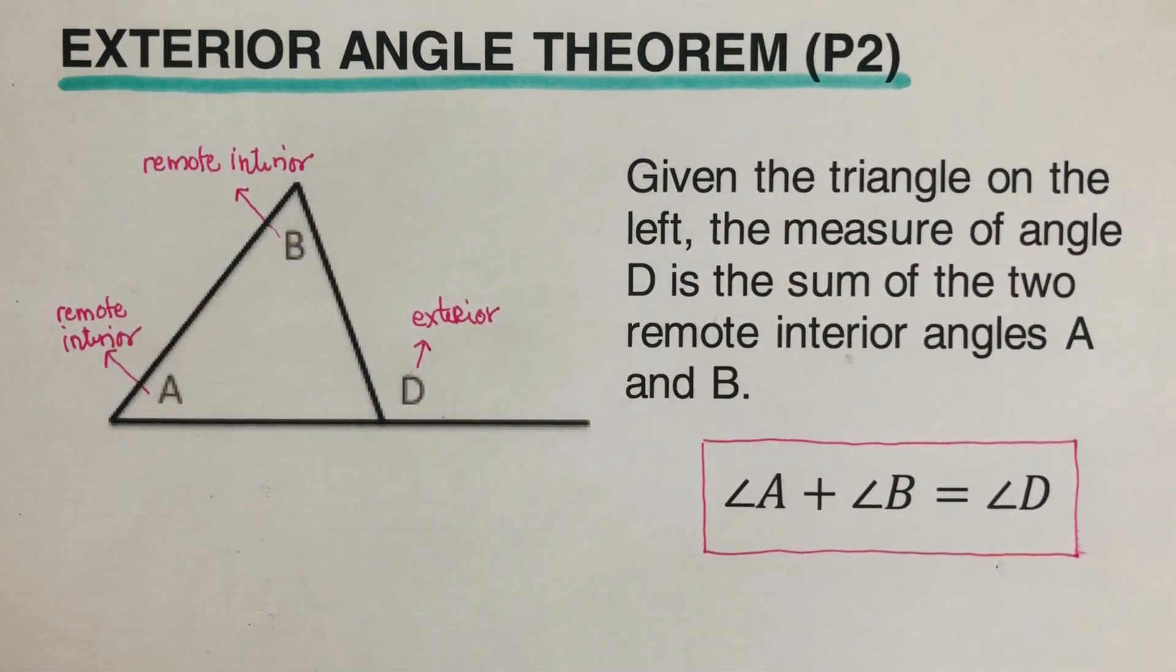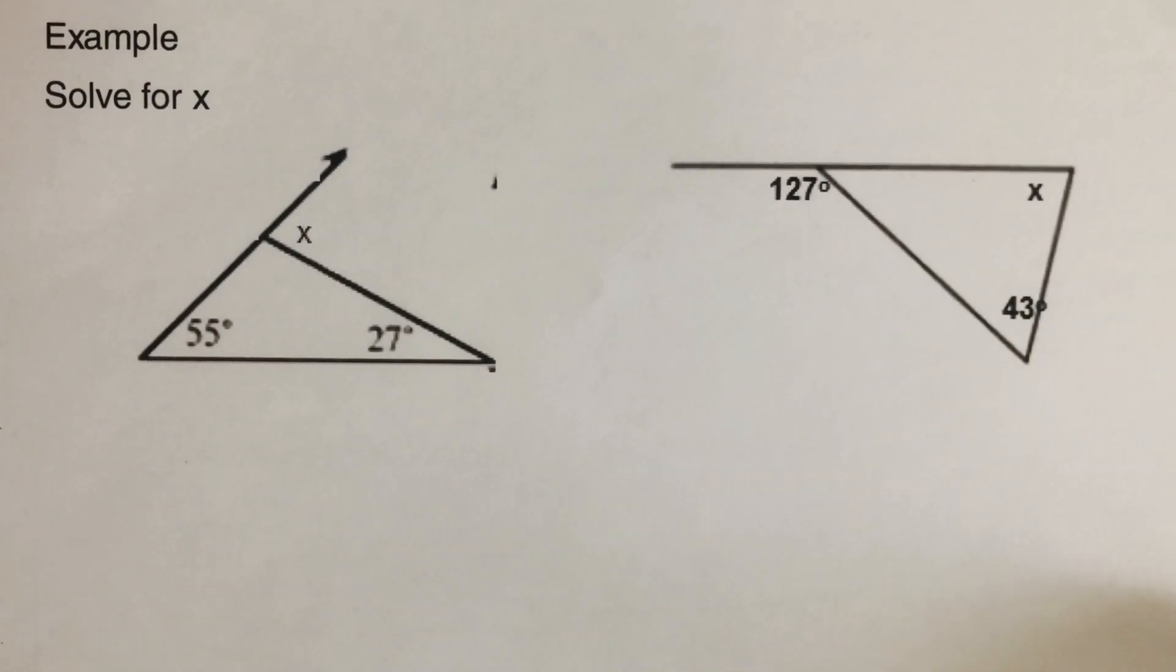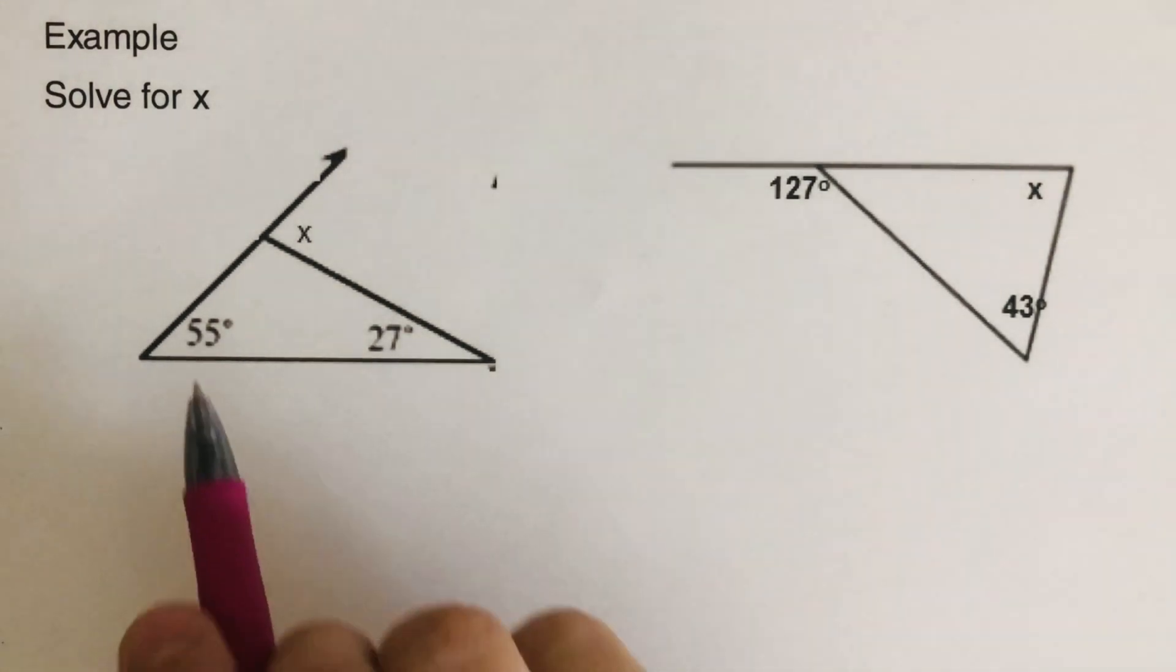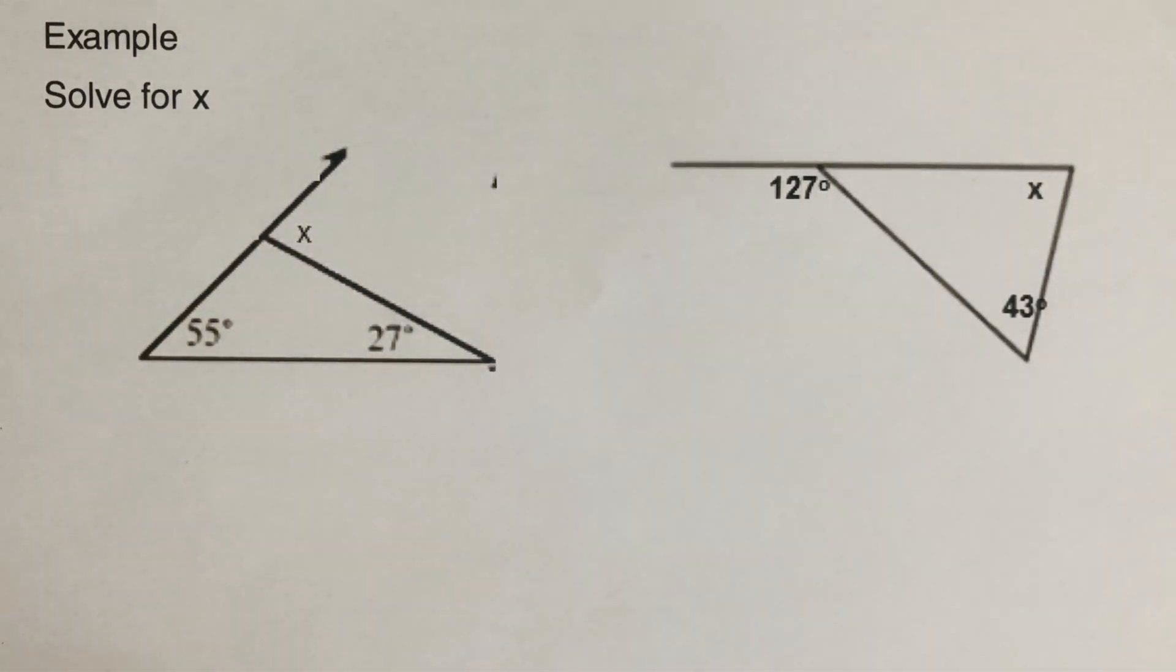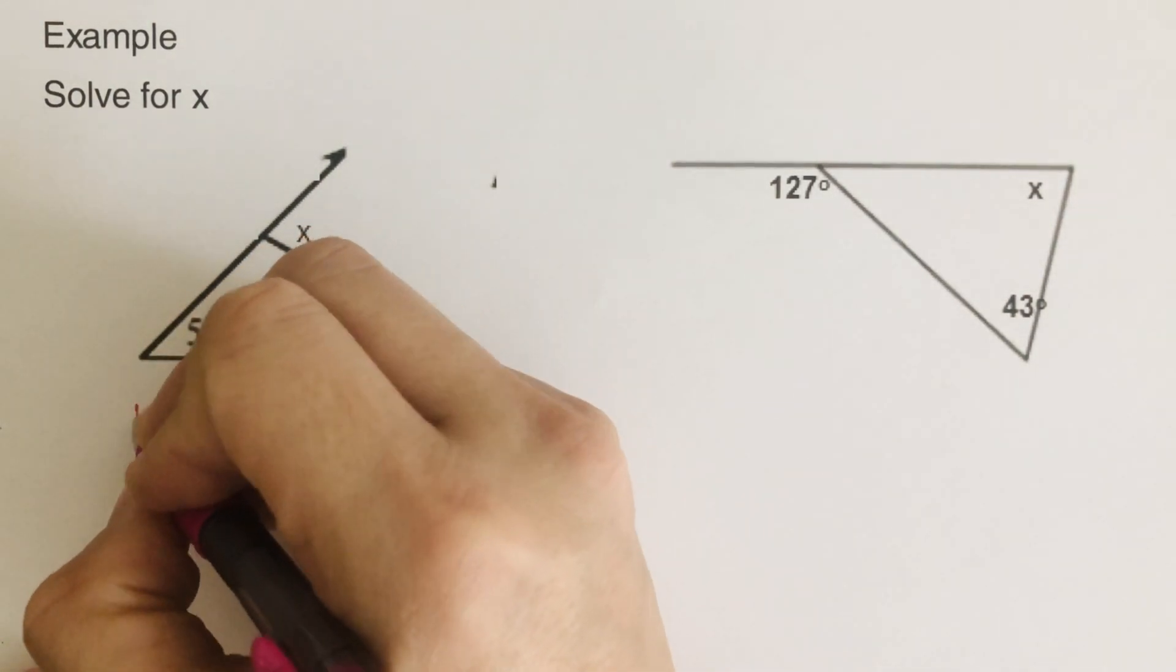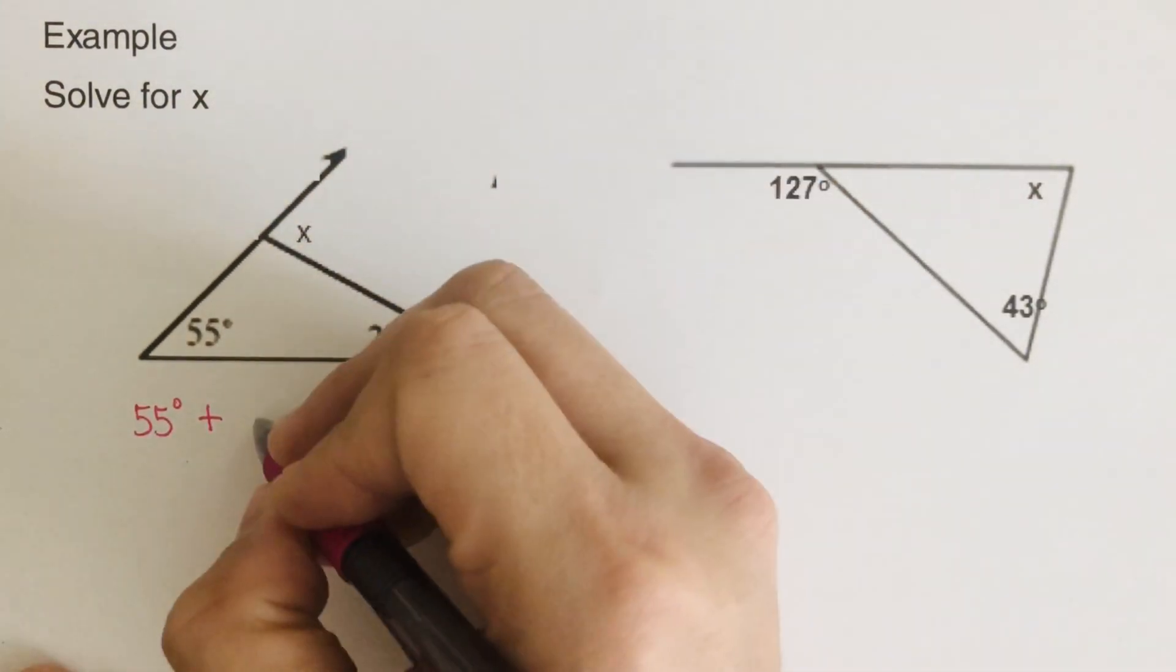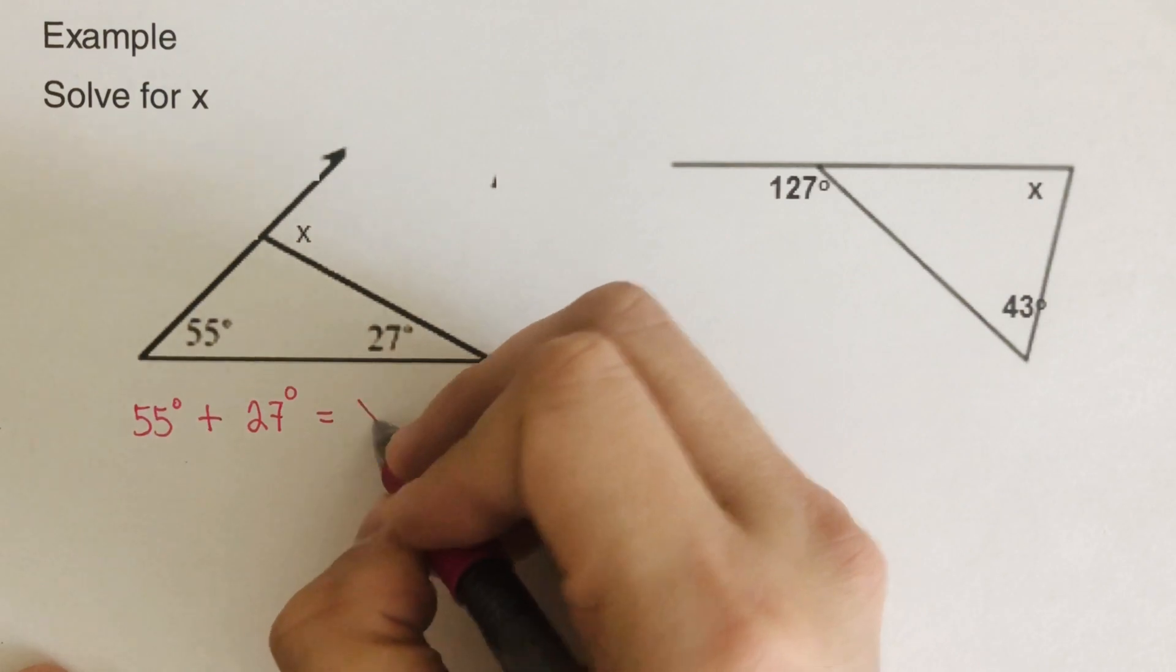Let's have an example to better see how this formula works. So let's take this example right here. So we're supposed to solve for x. We're given a triangle, so these are the two remote interior angles and this is the exterior angle. Again, we add the two remote, so that would be 55 degrees plus 27 degrees equals the exterior angle is x.